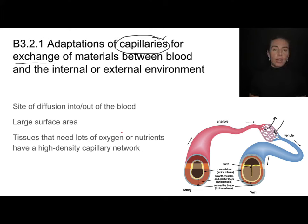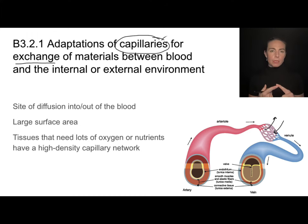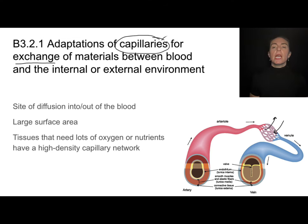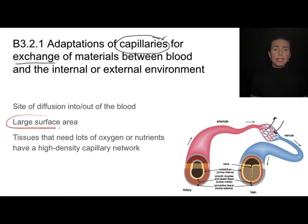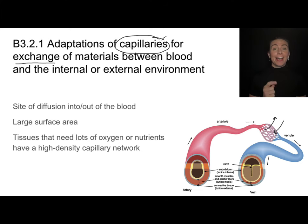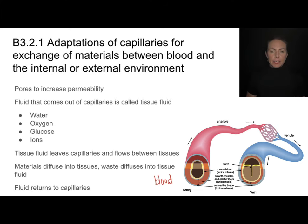Tissues that require a lot of oxygen or other nutrients are going to have a high capillary density. When we think about muscles in particular, they need lots of oxygen and lots of glucose, so they need lots of capillaries. If we want efficient diffusion, we want a large surface area, so that we can get that diffusion process going as efficiently as possible.